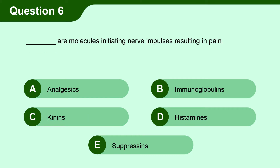Question 6. Blank are molecules initiating nerve impulses resulting in pain. A. Analgesics, B. Immunoglobulins, C. Kinins, D. Histamines, E. Suppressors.